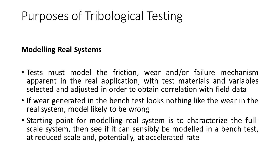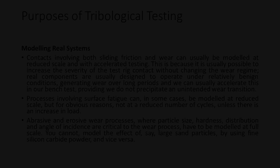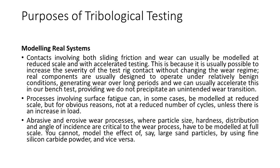The starting point for modelling a real system is to characterise the full-scale system, then see if it can sensibly be modelled in a bench test at reduced scale and potentially at an accelerated rate. As a general rule, contacts involving both sliding friction and wear can be modelled at reduced scale and with accelerated testing. This is because it is usually possible to increase the severity of the test rig contact without changing the wear regime. Real components are usually designed to operate under relatively benign conditions, generating wear over long periods, and we can usually accelerate this in our bench test, providing we do not precipitate an unintended wear transition.